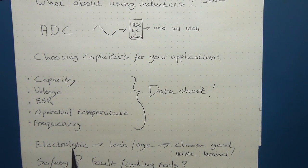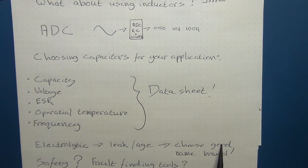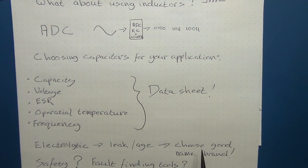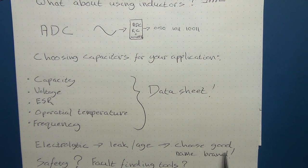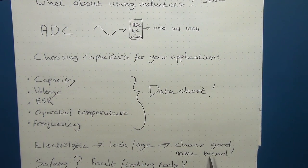So the electrolytic, because of it possibly might leak, because of age, you want to choose a good name brand. Be very wary. There are lots of cheapos out there, but if you want a capacitor which is going to last a long time, you don't have to go and revisit your electronics. Or if you're replacing capacitors, replace them with a good name brand.